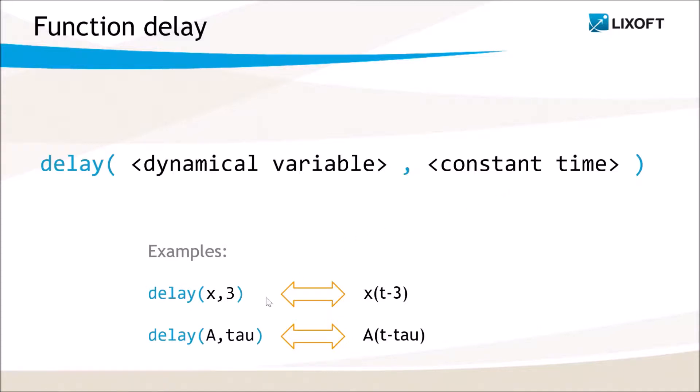The time can be a number, for example 3, or a parameter that can be estimated, for example here a parameter tau, but it has to stay constant over time.